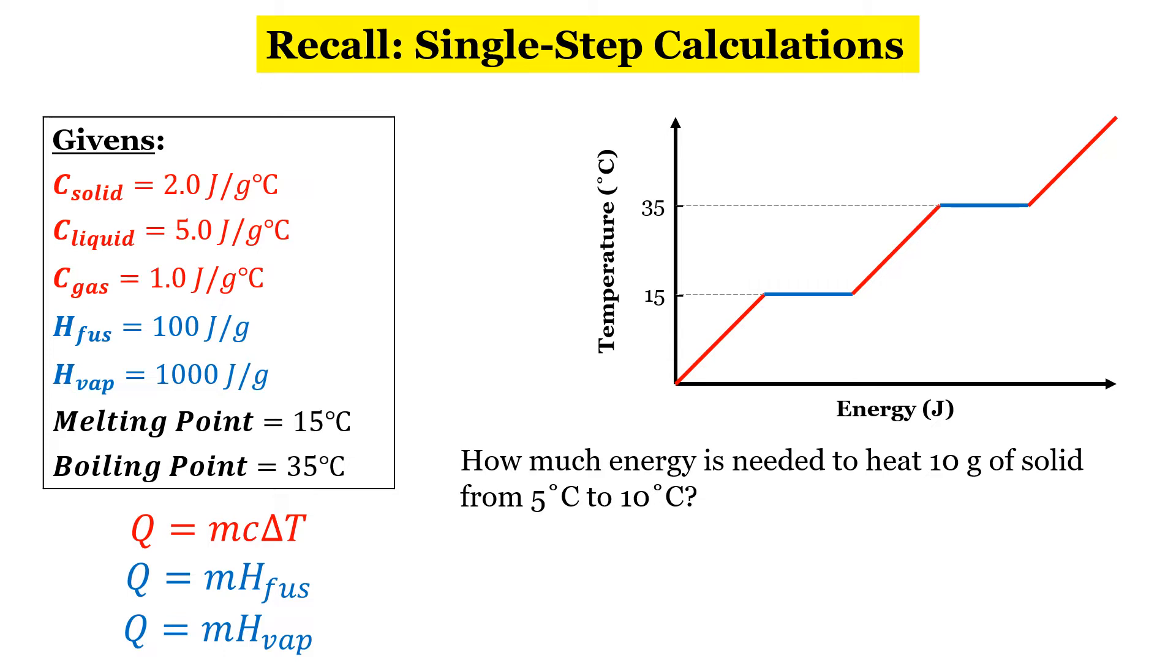So, to the right, you'll see a heating curve. To the left, I have all of the givens, so all of the specific heat values, the heat of fusion, the heat of vaporization, and the melting and boiling points, which are also identified on the graph.